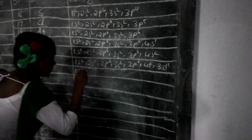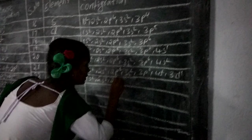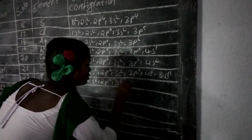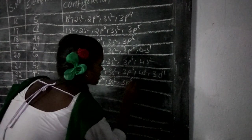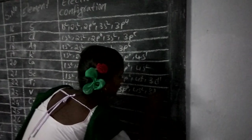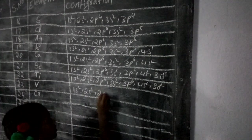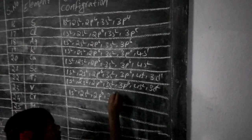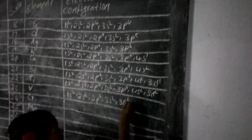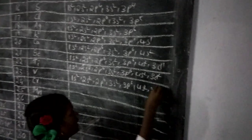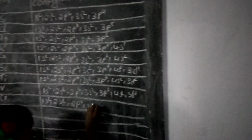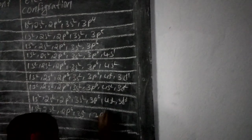1s2, 2s2, 2p6, 3s2, 3p6, 4s2, 3d3. 1s2, 2s2, 2p6, 3s2, 3p6, 4s2, 3d3. 1s2, 2s2, 2p6, 3s2, 3p6, 4s2, 3d5.